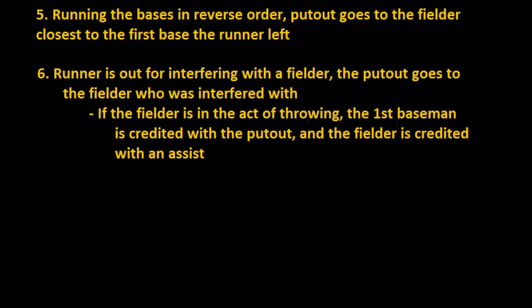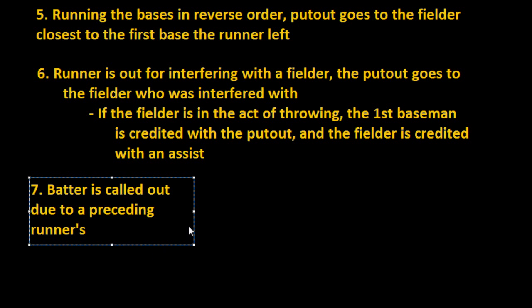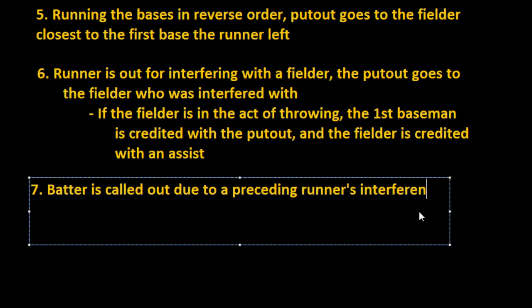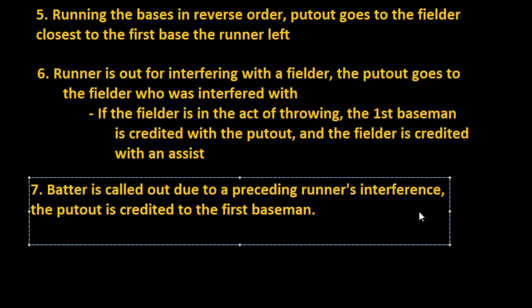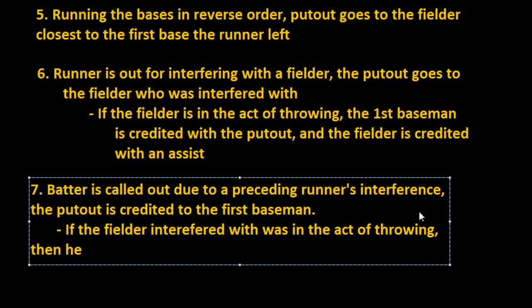...the scorer shall credit the put out to the first baseman. So when the batter is called out due to a preceding runner's interference, the put out is credited to the first baseman. And again, if the fielder who was interfered with was in the act of throwing, then he is credited with an assist.